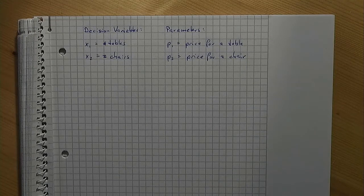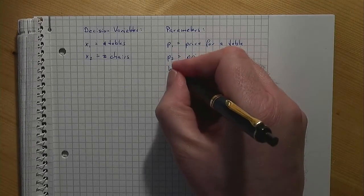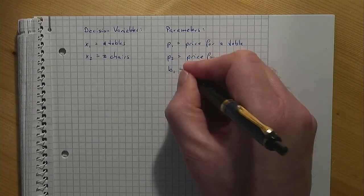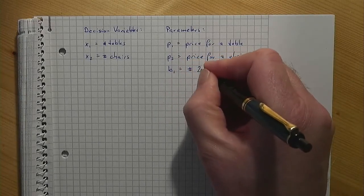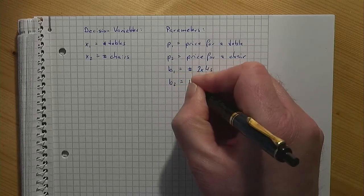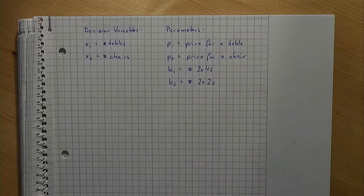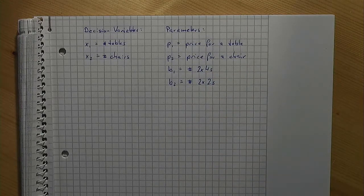b1 and b2 for the 2x4s and the 2x2s. These are the values that are available and production coefficients aij.